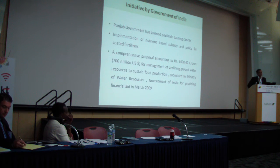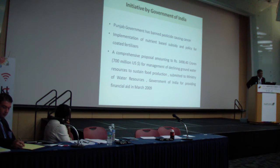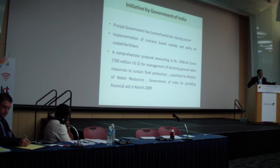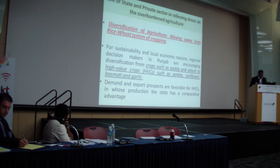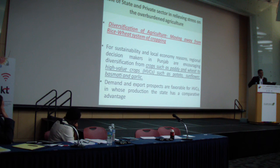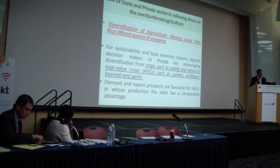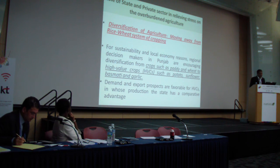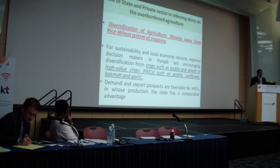What initiatives have been taken by the government and private sector? The government has banned a number of cancer-linked fertilizers, implemented a nutrient-based subsidy and polymer-coated fertilizers, and introduced a scheme to prevent over-extraction of water from Punjab's soils. The main scheme aims to diversify the rice-wheat cropping system to other high-value cash crops like potatoes, sunflower, pasta, tea, and garlic. However, this diversification scheme is not working because for rice and wheat the government gives a fixed support price, making farmers prefer to stay with those crops.